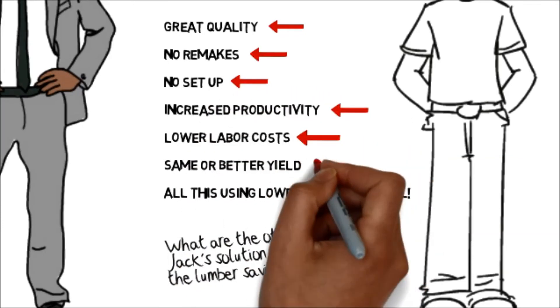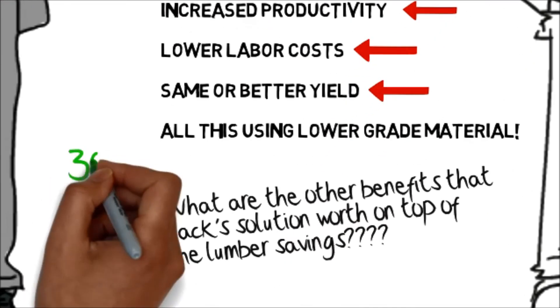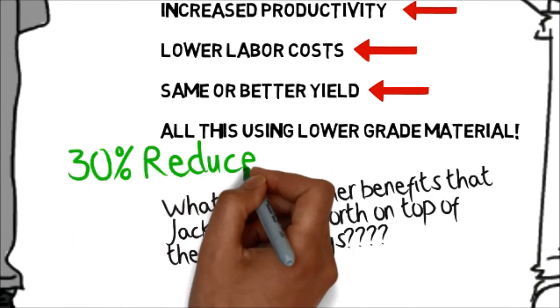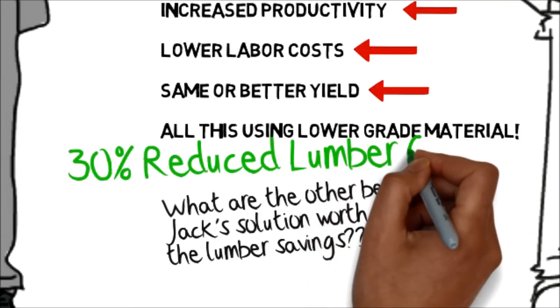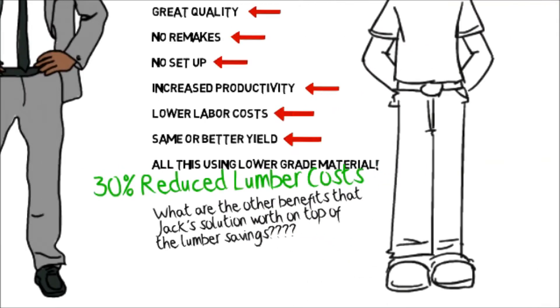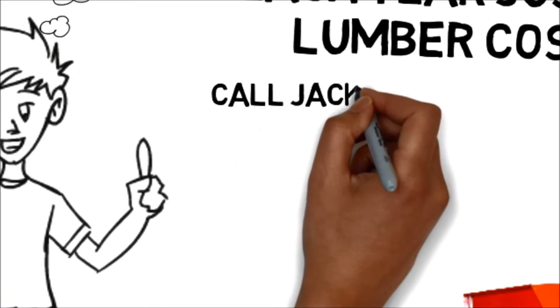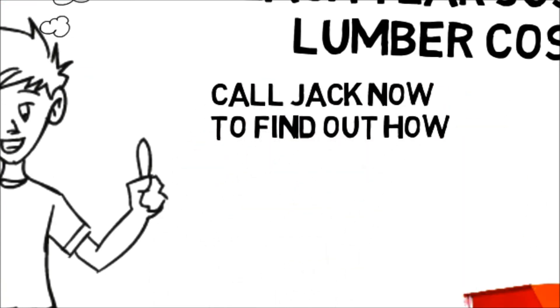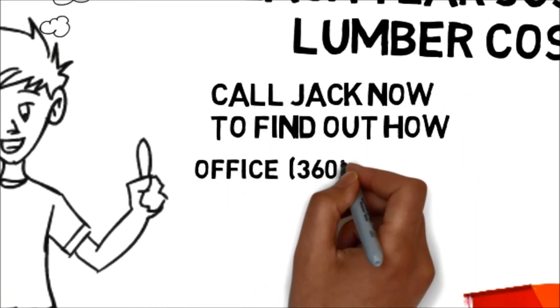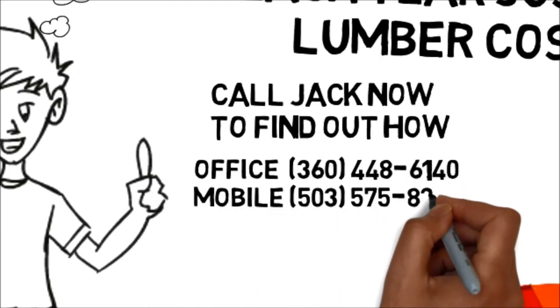So if you also would like to know how Tiger Stop solutions can help your bottom line, then you need to call Jack now. Call Jack anytime at 360-448-6140 or on his cell at 503-575-8227. Remember, call Jack now to find out how.